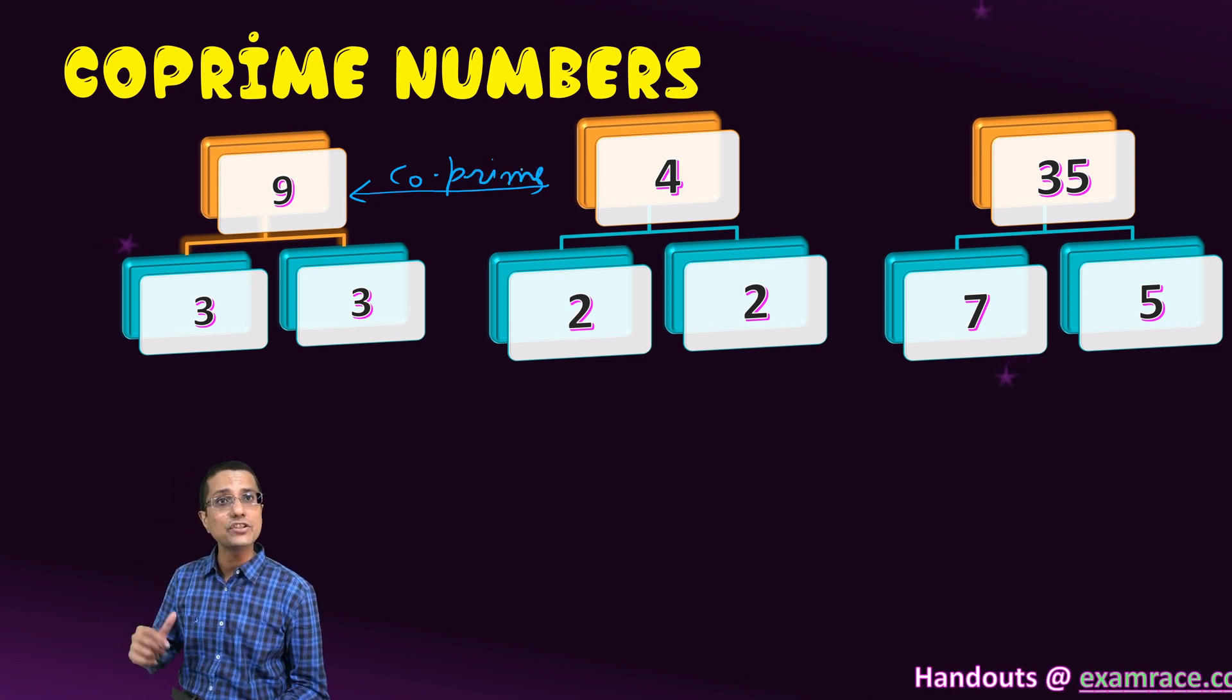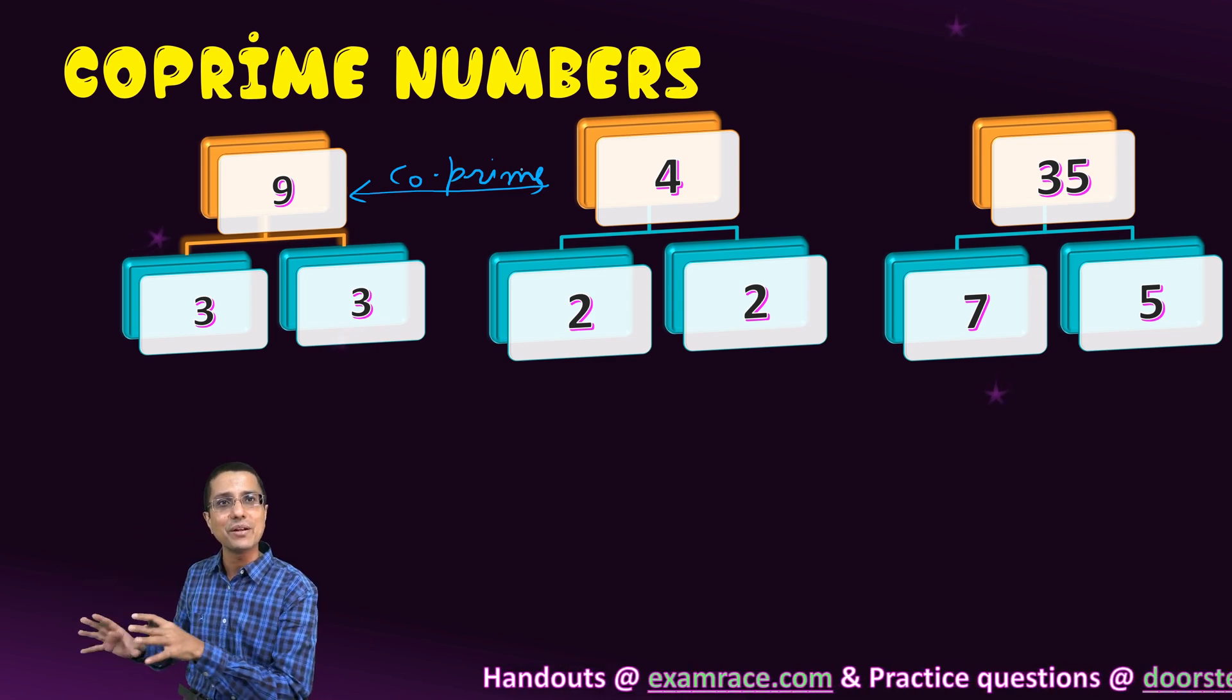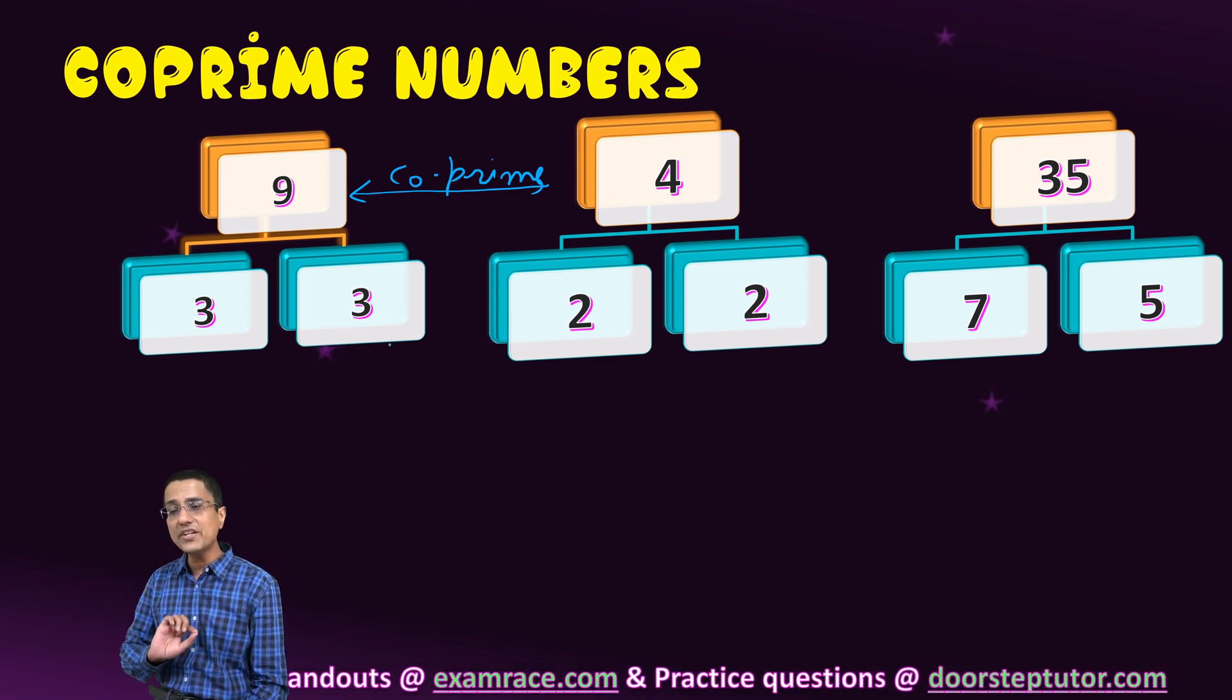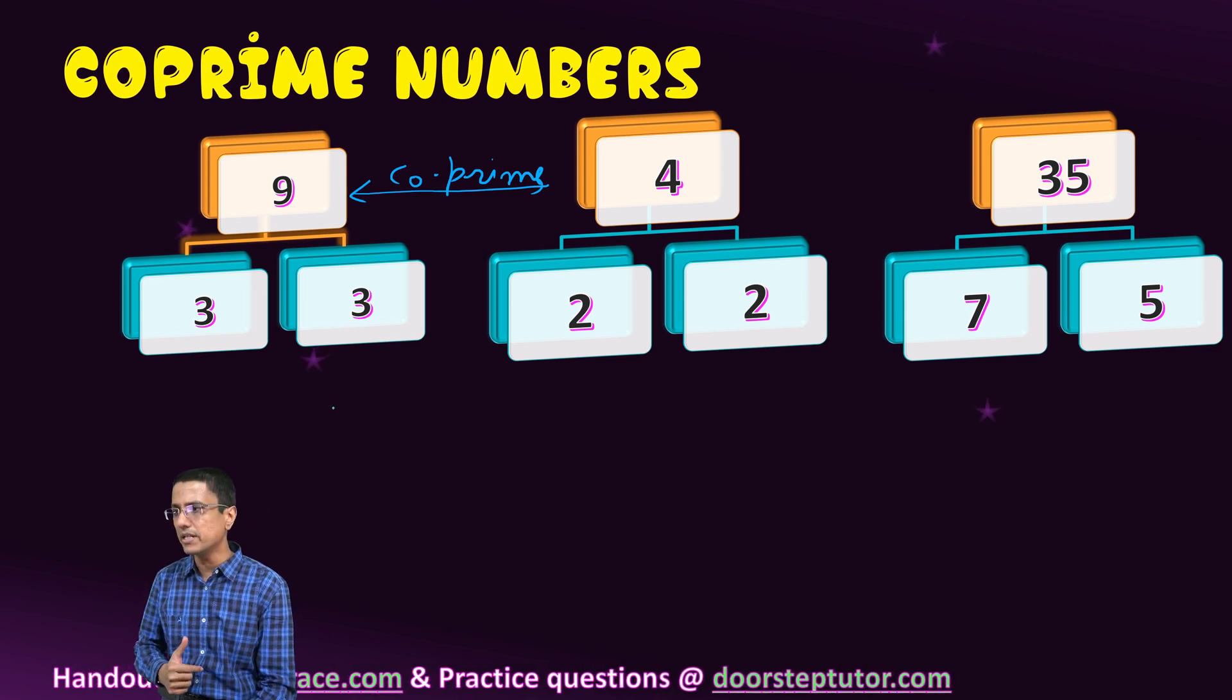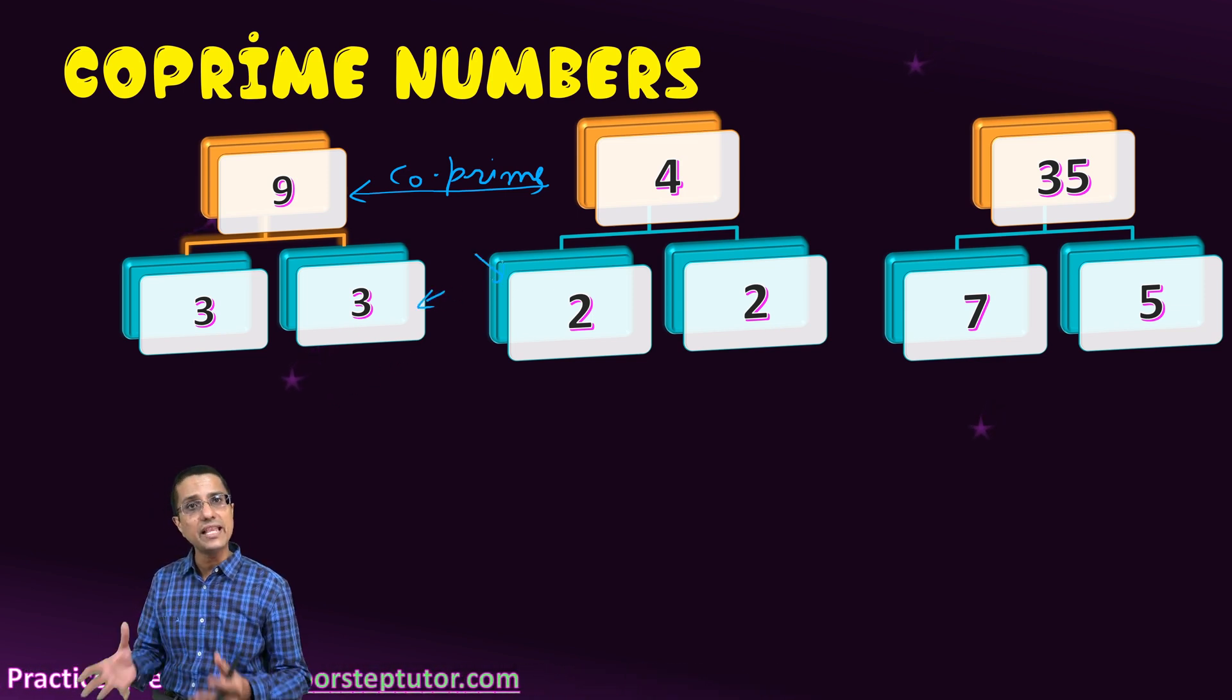I cannot say that 9 is co-prime. It does not apply to the number itself, one number. But co-prime denotes the relationship between two numbers or three numbers, saying that they have no common factors between them except one.